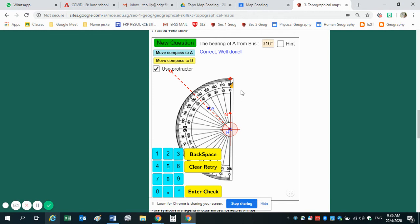So remember, if the angle is more than 180, you just have to start again from the south. Measure this angle, which is 136. You add to the 180 and you get 316 degrees.